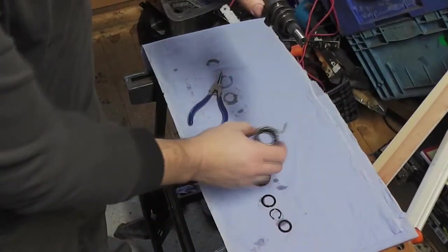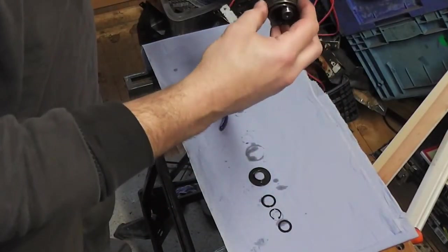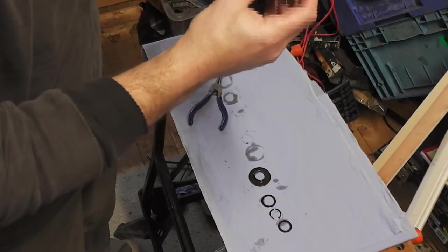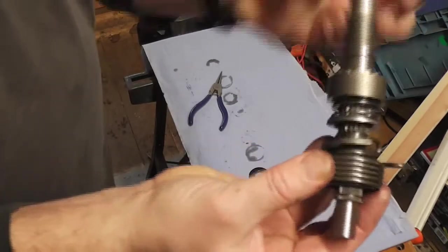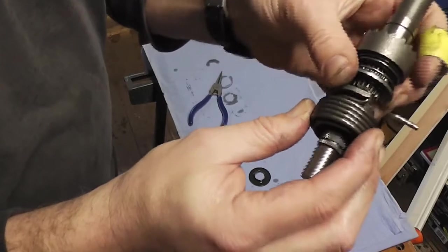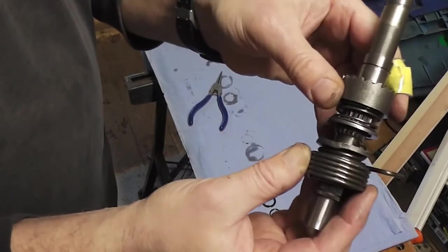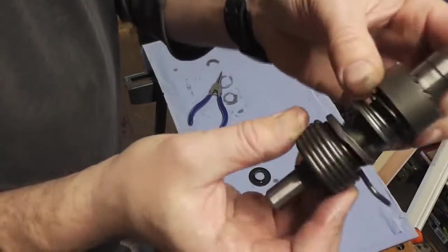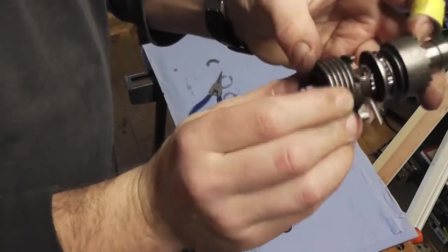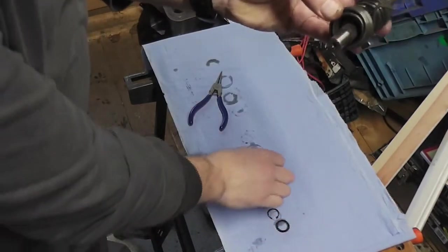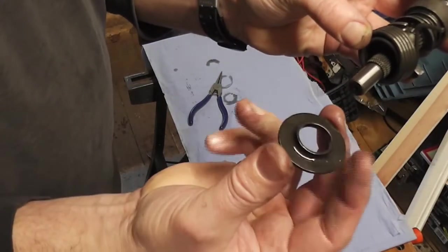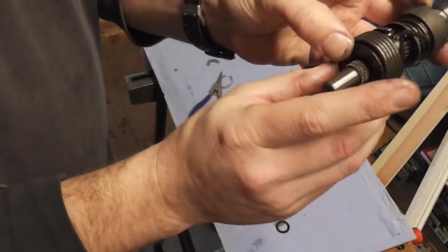Okay, so the next part to put on is the spring. That sits in there. So the spring then goes on and sits. The spring sits against there. Next we have another spacer, sits on the spring.